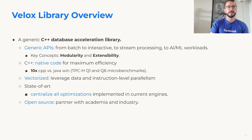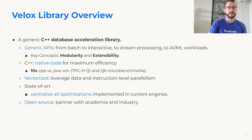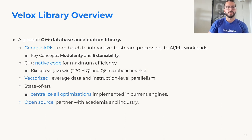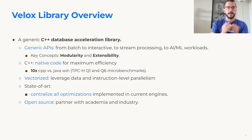As a quick overview, Velox is a C++ database acceleration library. We provide generic APIs that can be reused for different use cases from batch, to interactive, to stream processing, to graph analytics, to transactional systems, and even to AI and machine learning workloads. The key concepts are modularity and extensibility. The library is implemented in C++ and native code for maximum efficiency. All algorithms are vectorized to fully leverage data and instruction level parallelism. We look at all the different execution engines across different systems and consolidate all those optimizations into a single library — democratizing optimizations available today in some ad hoc engines and making them available to all engines leveraging Velox.